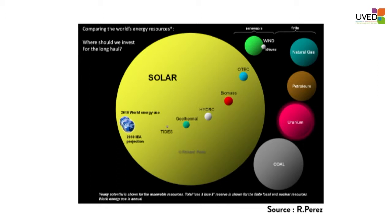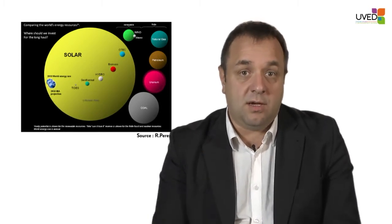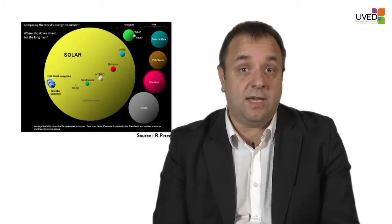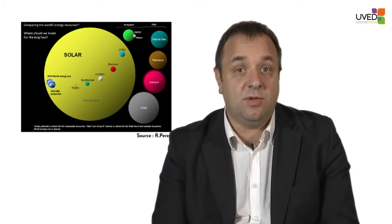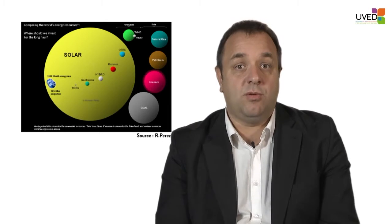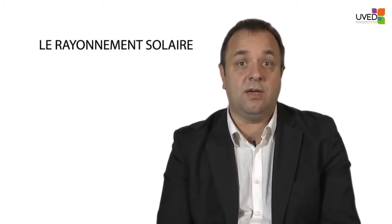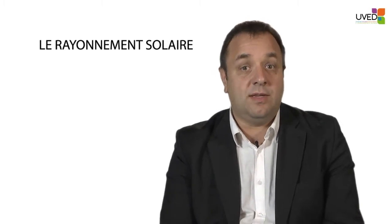Look at this graph. It shows spheres representing non-renewable energies still available — coal, uranium, oil, and natural gas. We see also the sources of renewable energy available every year: wind and hydroelectric power. And behind, we see the huge disk representing the Sun and the solar energy available compared with the world energy consumption for mankind in its whole.